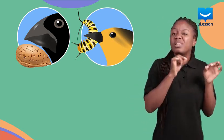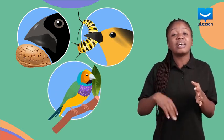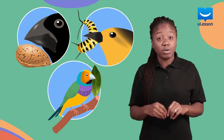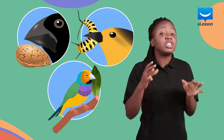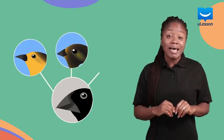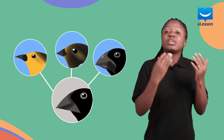Finches that fed on insects had thin pointed beaks that allowed them to pick up these insects. He also noticed that the finches in the Galapagos Islands and Ecuador were very different from the finches in other parts of the world. This led him to believe that these birds probably started off with a common ancestor, and as they spread through the islands, only those with features that allowed them to survive became the predominant species on each island.